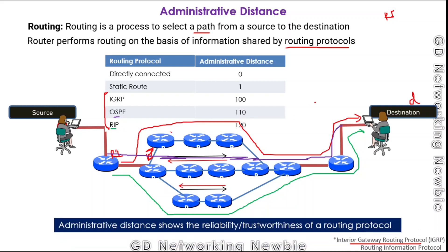Administrative distance shows the reliability or trustworthiness of a routing protocol. The smaller the administrative distance, the more reliable the protocol is. So here, IGRP with AD 100 is more reliable than OSPF with AD 110, and OSPF is more reliable than RIP with AD 120. Reliability is indicated by the administrative distance — the smaller the number, the more reliable the protocol.